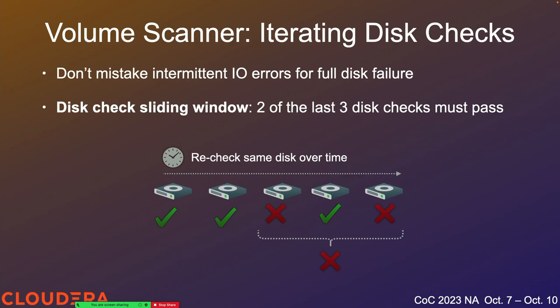Another reason to proactively fail volumes is that keeping faulty volumes in the data node means they'll keep serving reads and writes. If there's an error during that process, the client has to retry on another node, leading to performance problems. If the volume scanner shows that two-thirds of the time we touch a volume we get an error back, that means two-thirds of the time a client touching that volume will probably get an error — we probably don't want to keep using that disk.